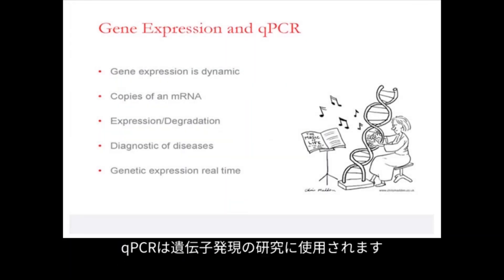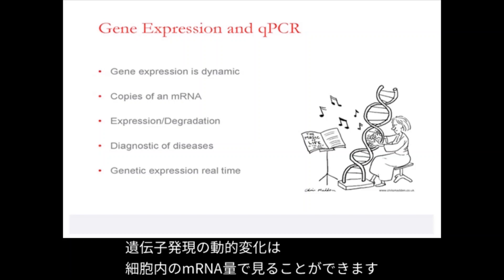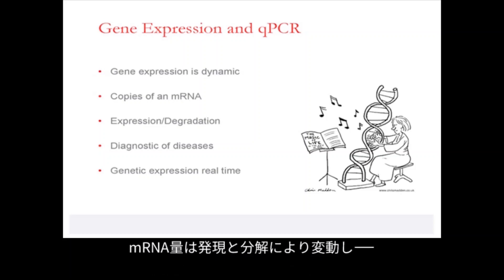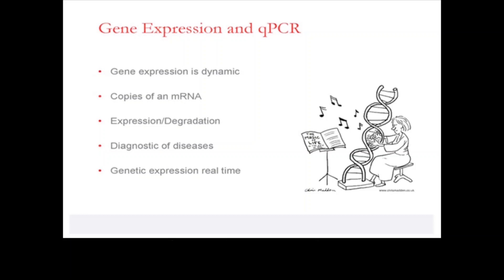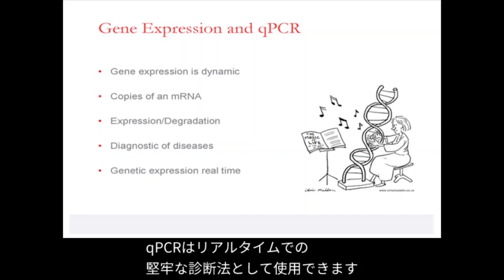The qPCR technique is used to study gene expression, which is a dynamic process depending on the state and conditions of the cells. The dynamism of gene expression reflects on the level of mRNA within the cells. The mRNA level can fluctuate by its expression and degradation, which the qPCR technique can be used to quantify. For example, in a disease state, the level of gene expression can be significantly affected; hence qPCR can be employed for robust diagnosis of disease in real time.